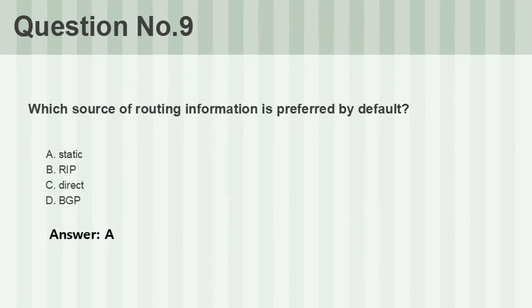Question number nine: Which source of routing information is preferred by default? A. Static. B. RIP. C. Direct. D. BGP. Answer: A.